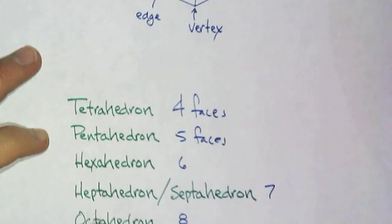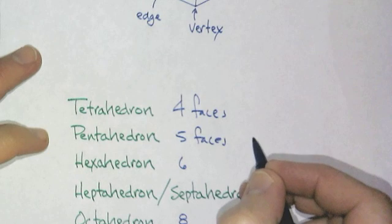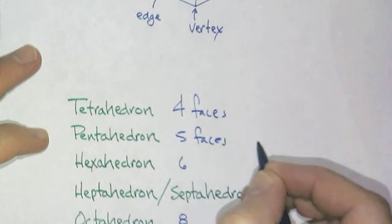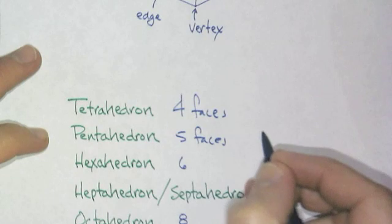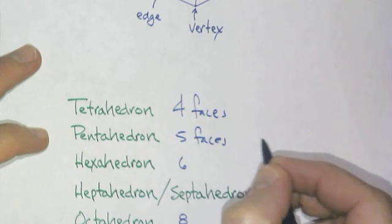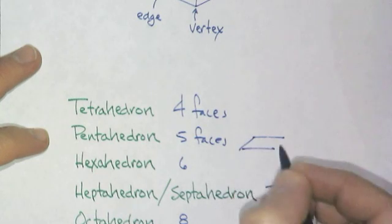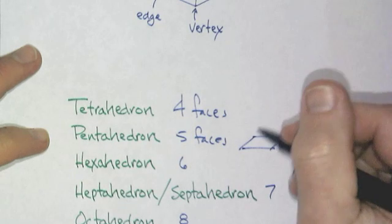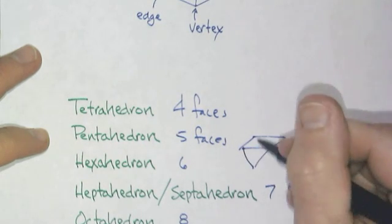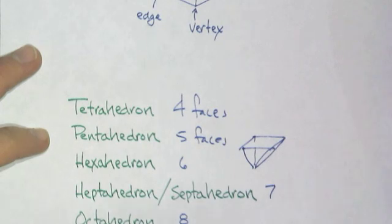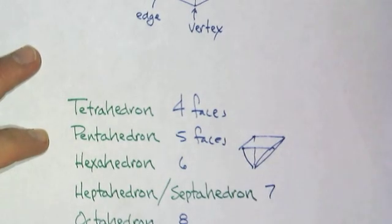A pentahedron has five faces. Well, that could be... let's see. It has a base of four and then a triangle. That pyramid is a pentahedron, right? One, two, three, four, five faces, right?